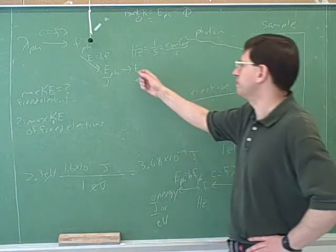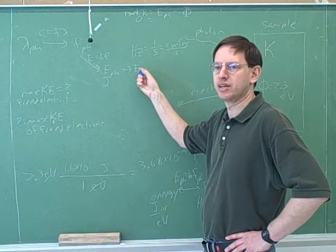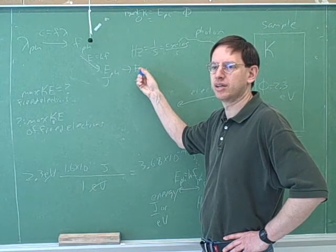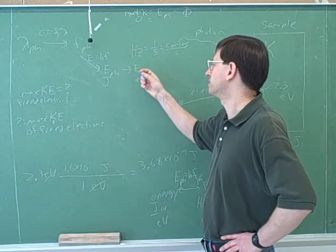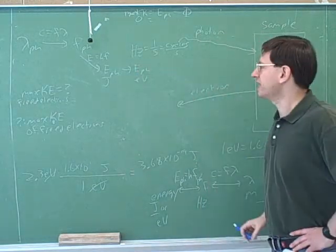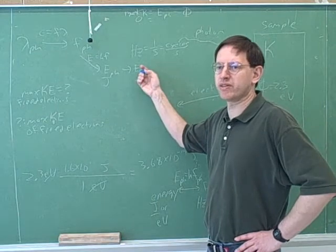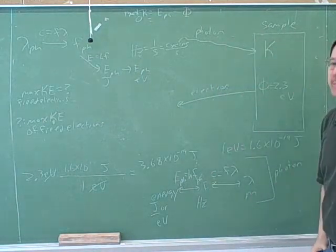Yeah. Now, is this number going to be bigger or smaller than the work function? It should be bigger. Yeah. So you'll do this minus this. On the other hand, what would it mean if this number came out smaller than the work function? The electrons aren't freed. Yeah. Then there wouldn't be.